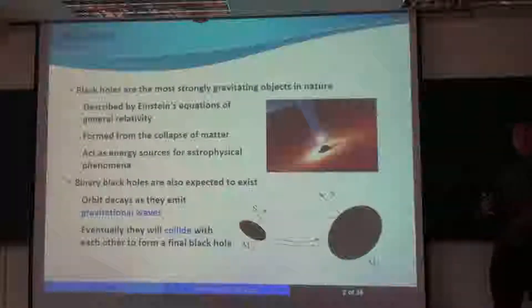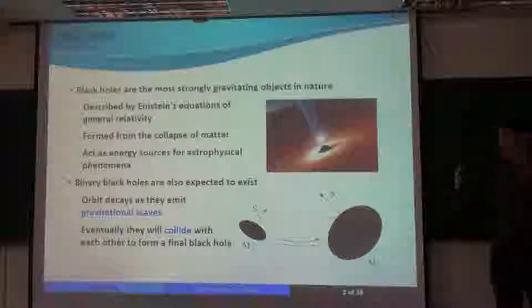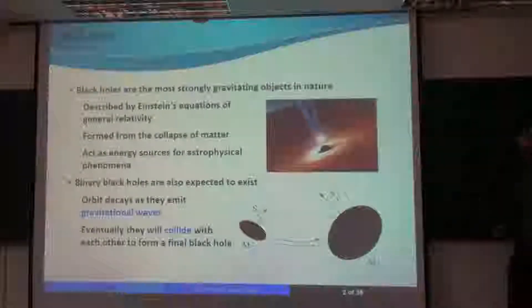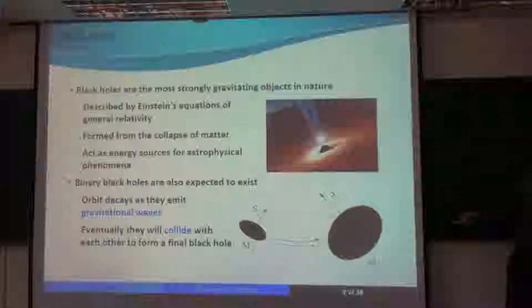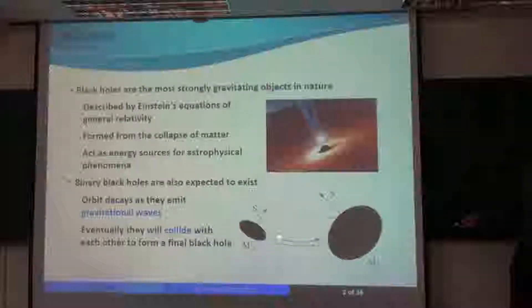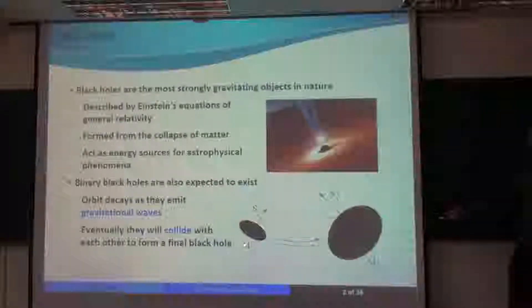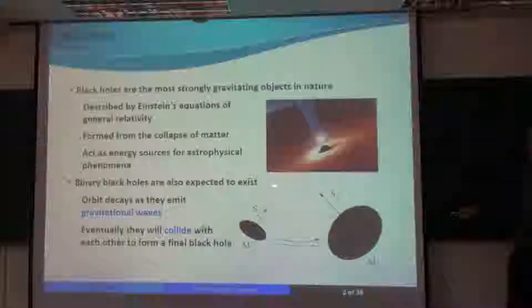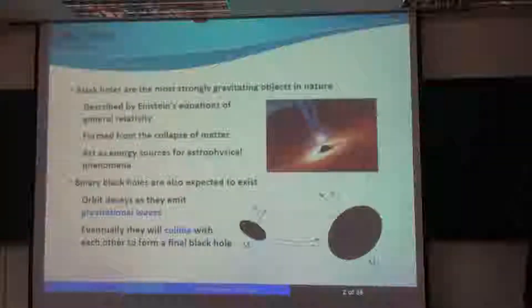In that process, they emit a bigger burst of gravitational waves. So in a binary, you typically have these parameters. You have the black holes that can have different sizes defined by their masses, and the spins of the two black holes.